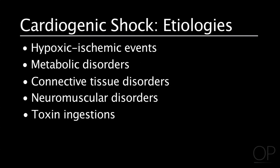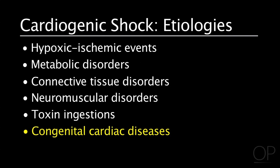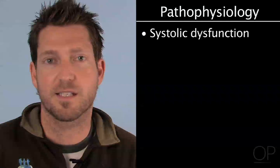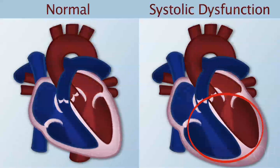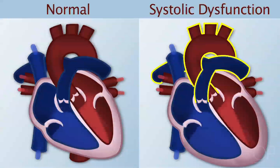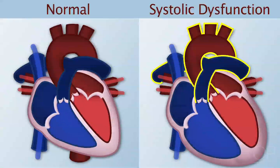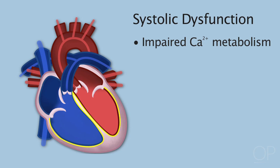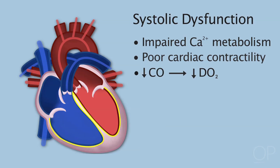One of the more common ones we also see here at Children's is congenital cardiac diseases. As far as pathophysiology, these can be broadly categorized into systolic or diastolic dysfunction. Systolic dysfunction is an inability of the heart to squeeze and properly eject an adequate blood volume to meet the metabolic demands of the tissue — toxins accumulate, there's myocardial edema, impaired calcium flux and cycling, decreased coronary blood flow, poor cardiac contractility, decreased cardiac output, and ultimately decreased oxygen delivery.